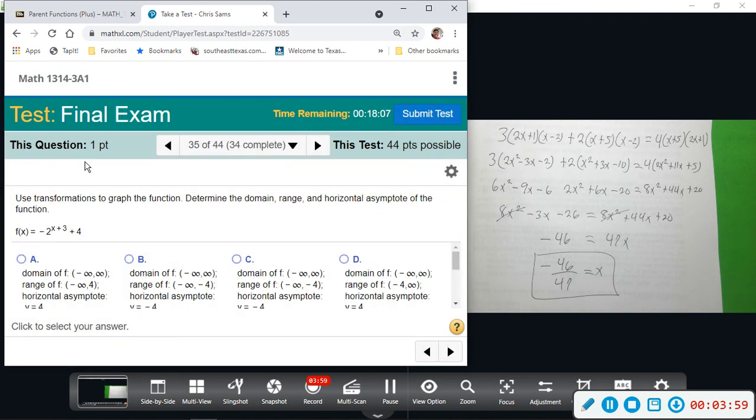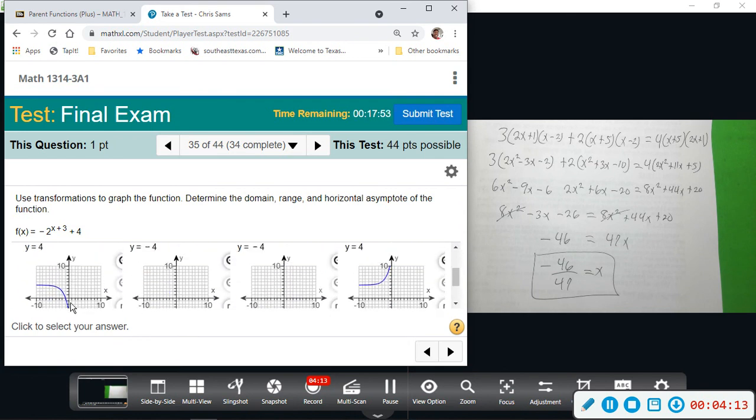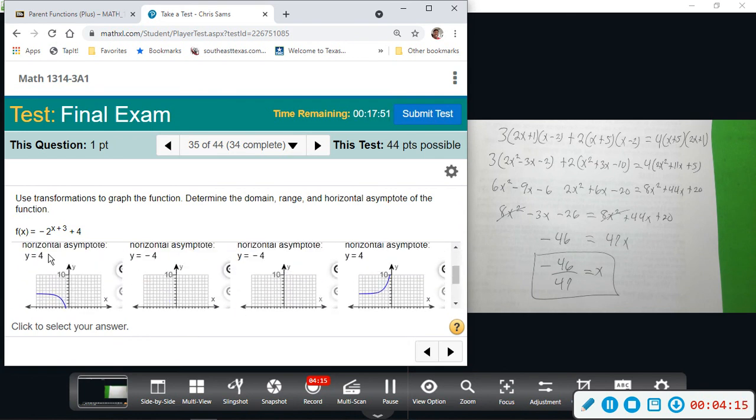This one wants us to use transformations of the graph to determine domain, range, and horizontal asymptote. So when we have exponential functions, the asymptote is 0, but the plus 4 is shifted up 4. So if I'm looking at options, my asymptote should be positive 4, so that would be A or D.